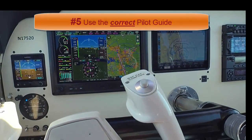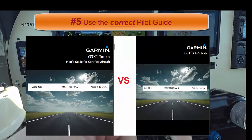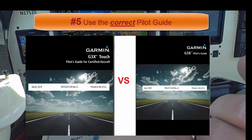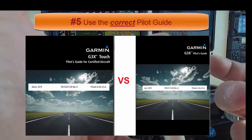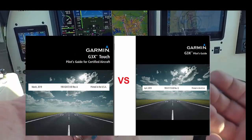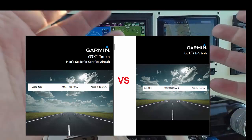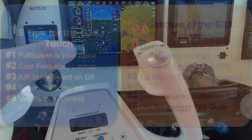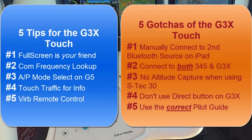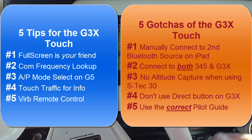The fifth and final gotcha is the pilot guides. There's a G3X pilot guide and there's a G3X Touch for certified simulation aircraft. Make sure you have the right pilot guide. I called Garmin yesterday and they caught me reading from the wrong book — I did a quick Google search and found the book I thought I was looking for, but there's a big difference between the certified guide and the experimental guide. So just make sure you have the right one. Those are my five tips and five gotchas for operating the Garmin G3X in my airplane.